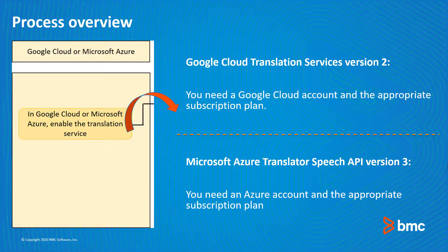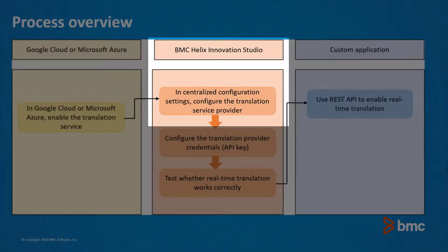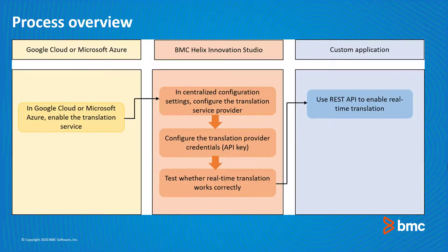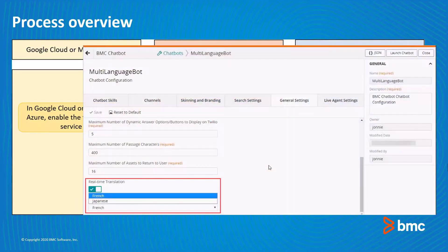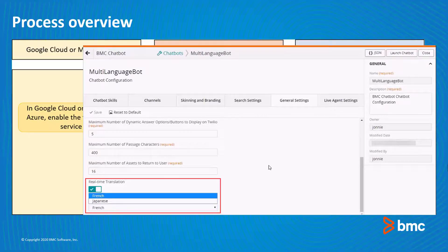After you decide your real-time translation provider, you must configure the relevant settings in centralized tenant configuration and configure the translation provider credentials in BMC Helix Innovation Studio. You can then test whether the real-time translation works correctly.